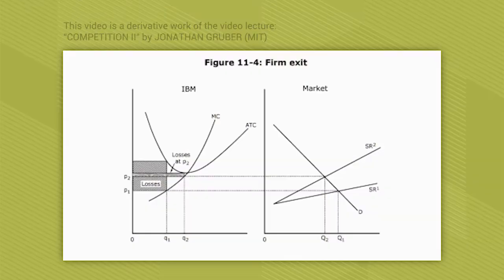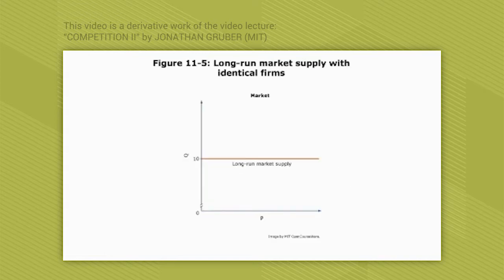So through both entry and exit, we get this condition that's illustrated in figure 11.5. In 11.5 we see that in the long run, firms always supply not on a single curve but at a single point.